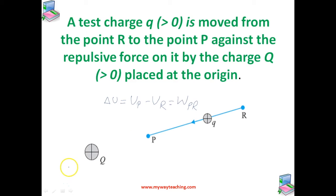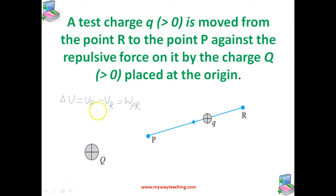There are some important points to consider. The right side of this equation depends only on the initial and final positions — U_P minus U_R — meaning the work done by an electrostatic field in moving a charge from one point to another depends only on the initial and final points and is independent of the path taken. This is the fundamental characteristic of a conservative force, and this concept of potential energy would not be meaningful if the work depended on the path.